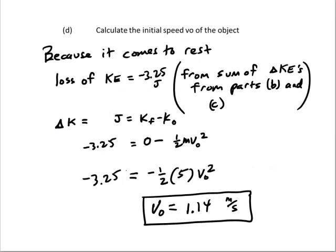Part D, we want to calculate the initial speed of the object, and we are going to do that with the work kinetic energy relationship. The work done by the springs is equal to the change in kinetic. That was 3.25 joules. That's the sum of your answers to B and C. We have, then change in kinetic is equal to kinetic final minus kinetic initial.